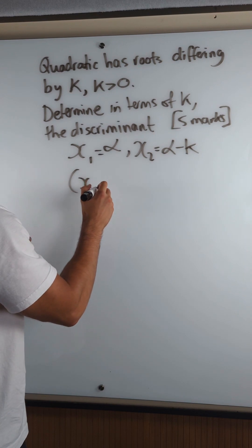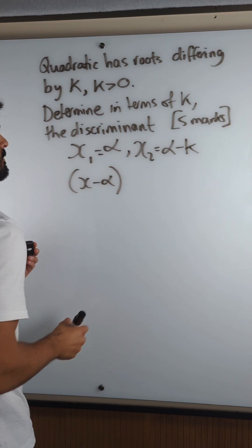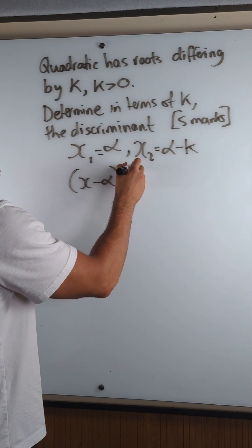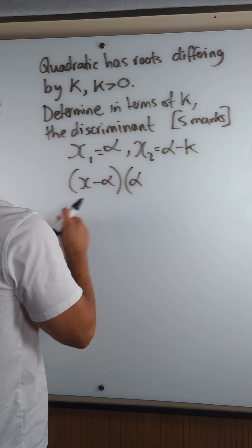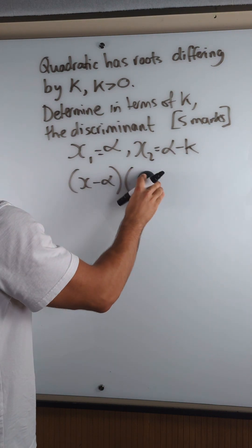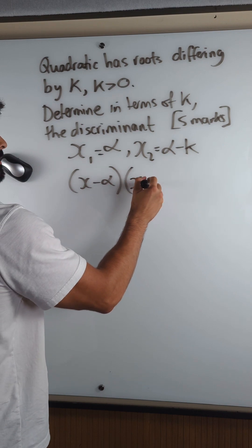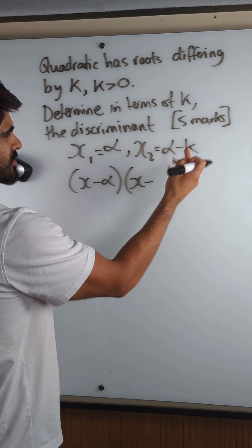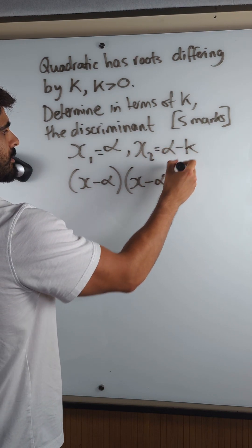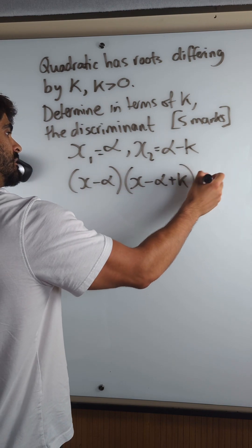So my quadratic would look like this. In factorised form, one of the brackets would be x minus alpha, and the other would be x minus alpha minus k, which I'm just going to expand. So x minus alpha plus k equals zero.